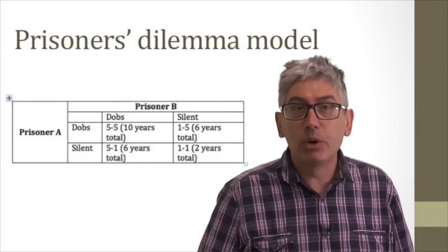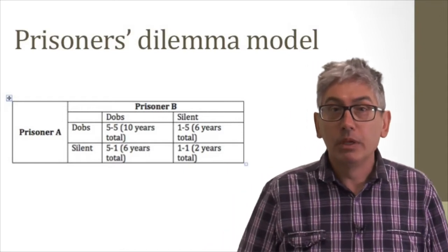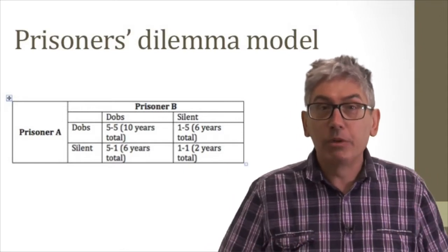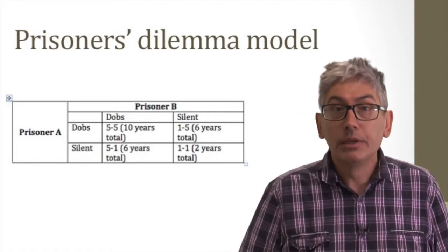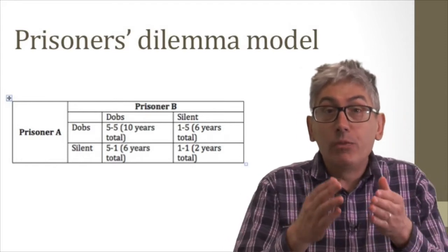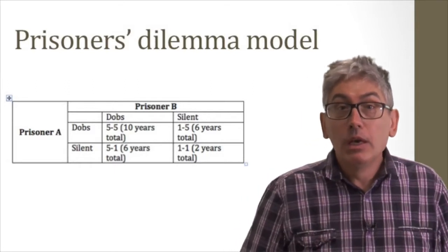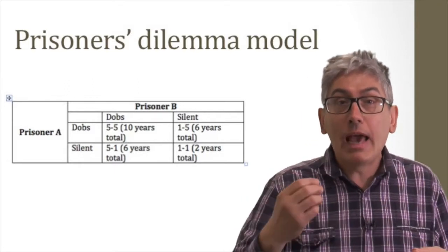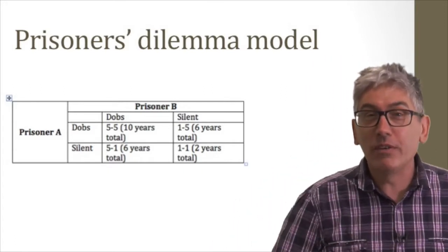The scenario is pretty simple. Two cons are picked up for committing a crime. They're interrogated separately and don't know what the other one has or has not said. They are aware that if one dobs on the other while the other keeps their mouth shut, the silent crim will get a heavy sentence and the grass will get off, turning Queen's evidence.